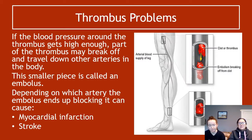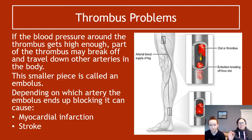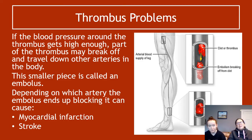What happens is you've got high pressure blood on one side of the clot and nothing on the other. The blood pressure might get quite high on the blocked side and this can cause bits of the clot to break off. A broken-off piece of clot travelling freely through the bloodstream is called an embolus. Depending on which artery the embolus ends up blocking, it can cause myocardial infarction or stroke, as well as tissue death elsewhere in the body.